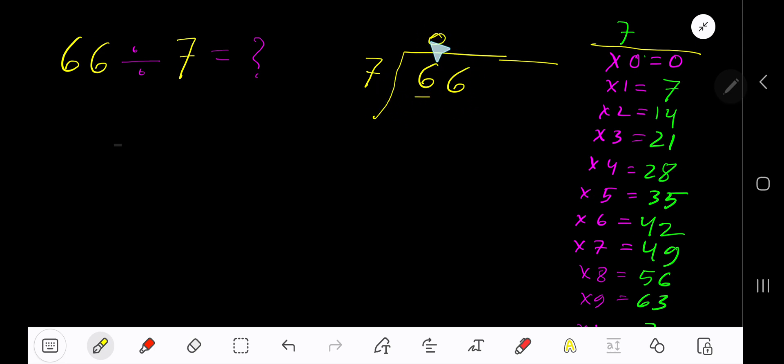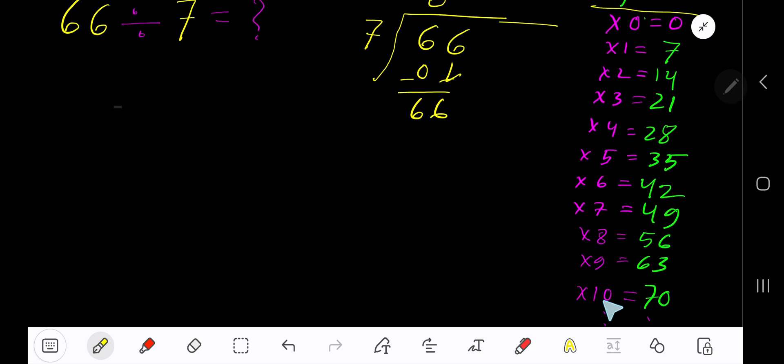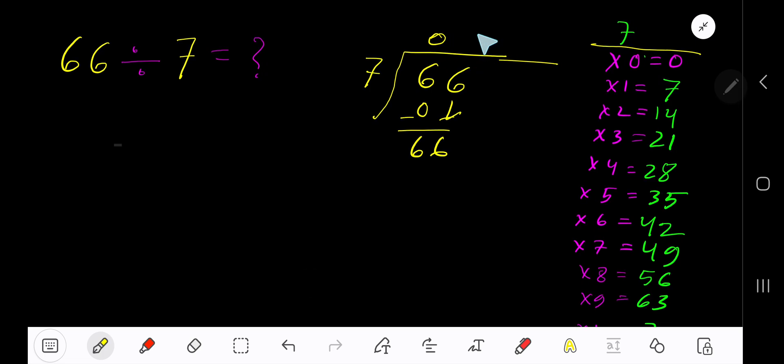0 times 7 is 0. Subtract 6. Bring down the next digit. 7 goes into 66 how many times? Look here: 10 times would be 70, which is too big, so 9 times. 9 times 7 is 63.